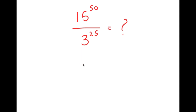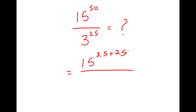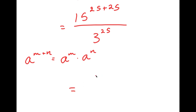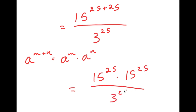To solve this, I'm going to first start by rewriting this as 15 to the power of 25 plus 25 over 3 to the power of 25. The reason I did this is because now I can use the property a to the power of m plus n is equal to a to the power of m times a to the power of n.